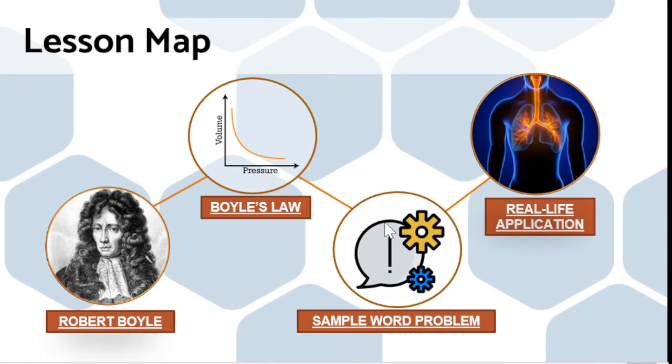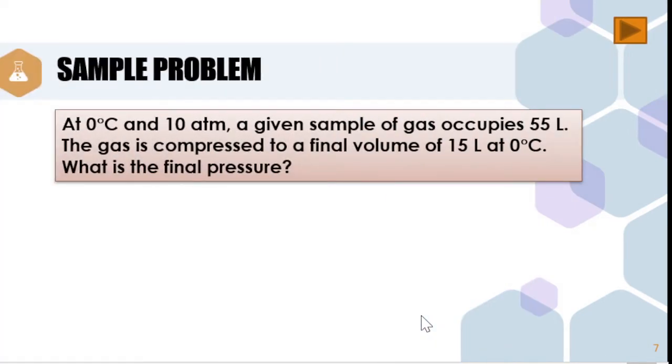Now that we are familiar with the different formulas, let us proceed with the sample word problem. Given this problem: at 0 degrees Celsius and 10 atmospheres, a given sample of gas occupies 55 liters. The gas is compressed to a final volume of 15 liters at 0 degrees Celsius. What is the final pressure?